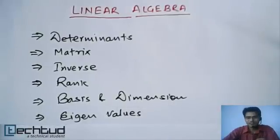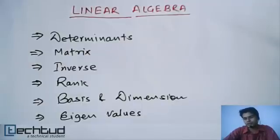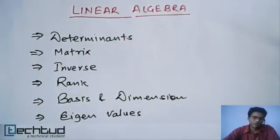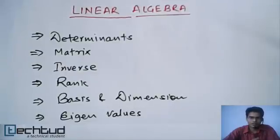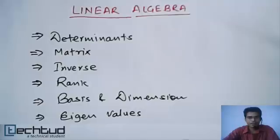Next is matrix — we will study matrix and various operations of matrix like multiplication of two matrices, what the conditions are, and all those things. Then we will come to inverse of matrix, which is another important topic, then rank of matrix and the physical significance of rank, and then basis and dimension.